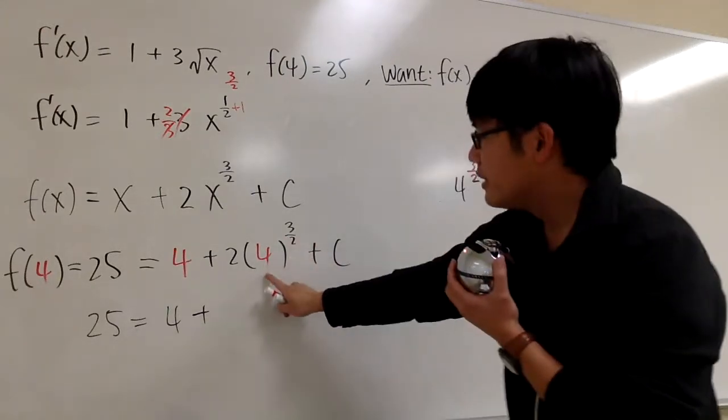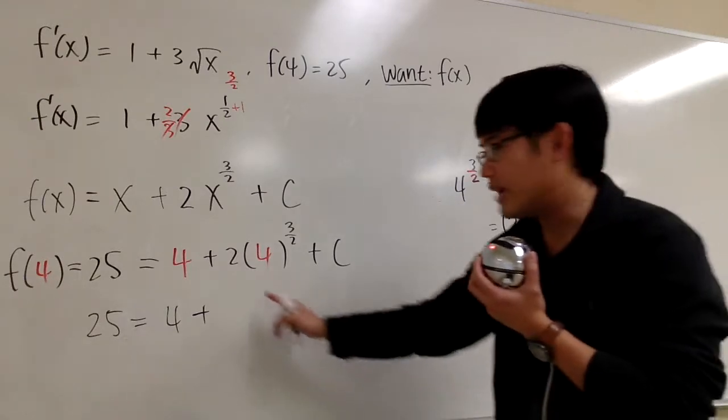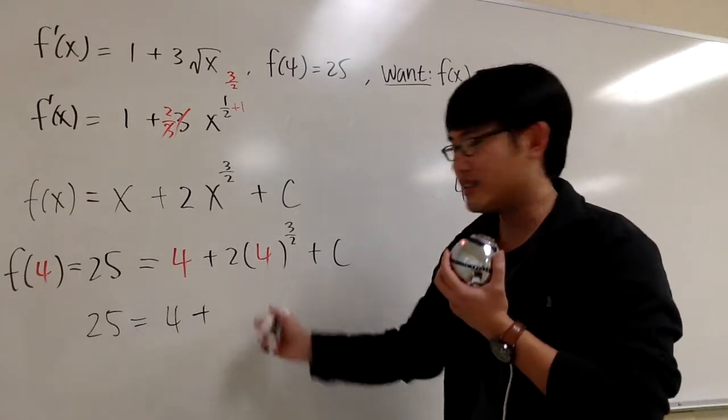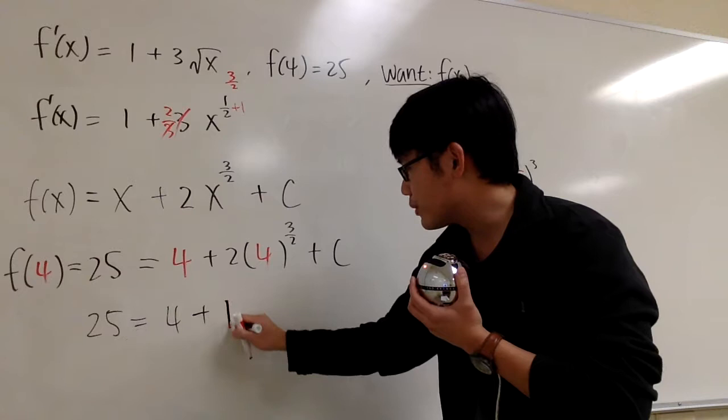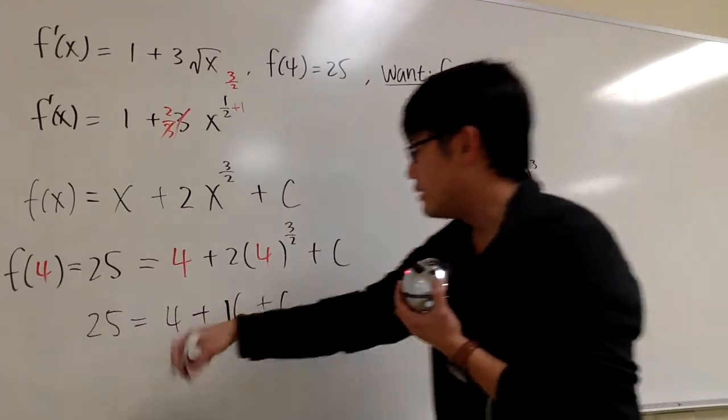So 4 to the 3/2 power is equal to 8. I can come back right here. We know it's going to be 8, but then we haven't multiplied by 2 yet. Altogether, you get 16. Let me just write down 16. And we have the plus C, and you just solve this.